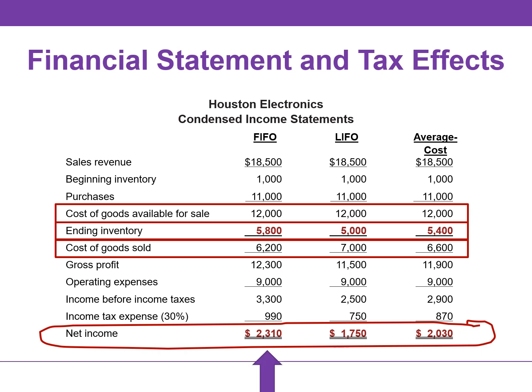To management, higher net income is an advantage because it causes external users to view the company more favorably. When prices are rising, companies tend to prefer FIFO because it results in higher net income. So why would a company want to report lower earnings or even select LIFO? The reason is that LIFO results in the lowest income taxes because of lower net income. In this example, income taxes are $750 under LIFO versus $990 under FIFO. The tax savings of $240 makes more cash available for use in the business.